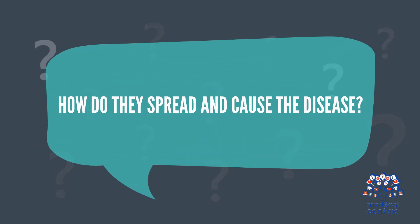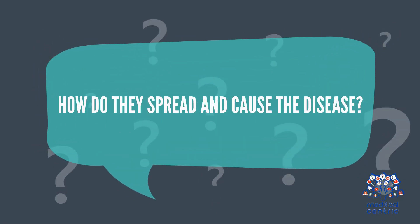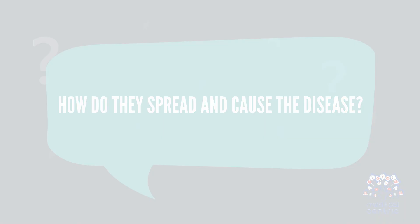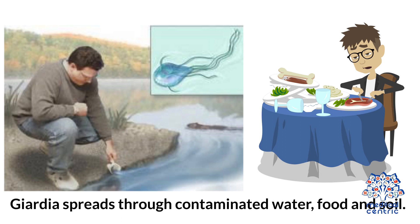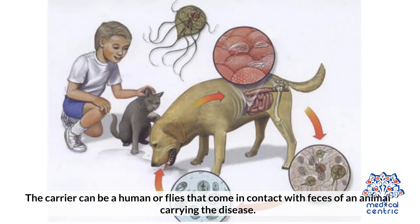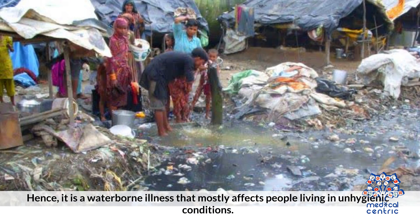How do they spread and cause the disease? Giardia spreads through contaminated water, food, and soil. The carrier can be a human or flies that come in contact with feces of an animal carrying the disease. Hence, it is a waterborne illness that mostly affects people living in unhygienic conditions.